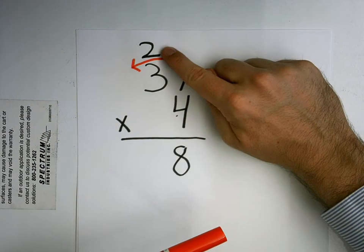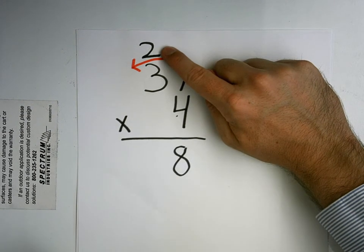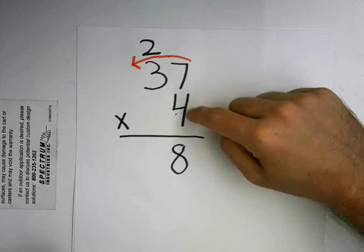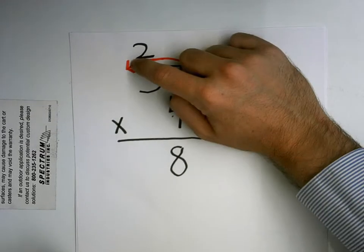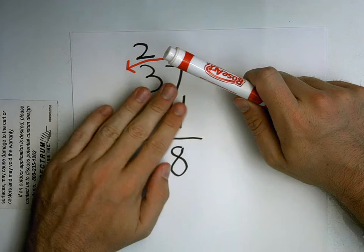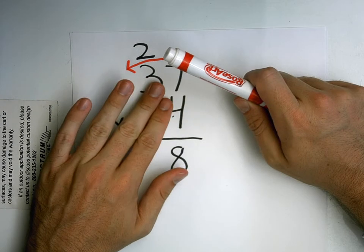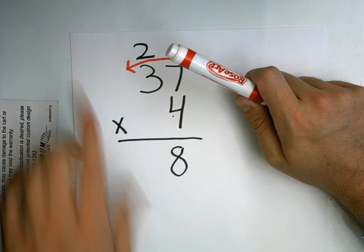because I have this two up here that I got from my twenty-eight, don't I? Now I don't go four times three times two or add them up and go four times five. Nope. I go four times three and when I get my product, I add this number up here.